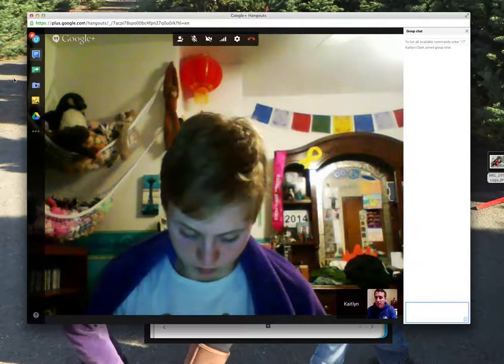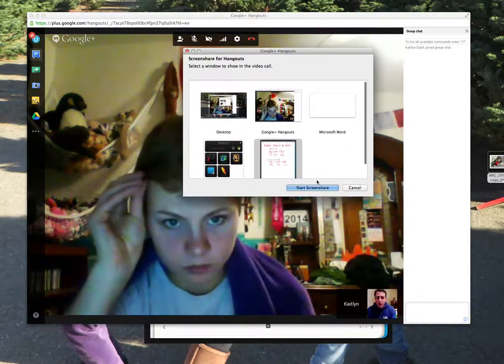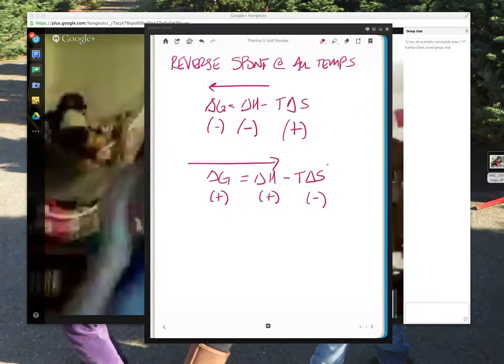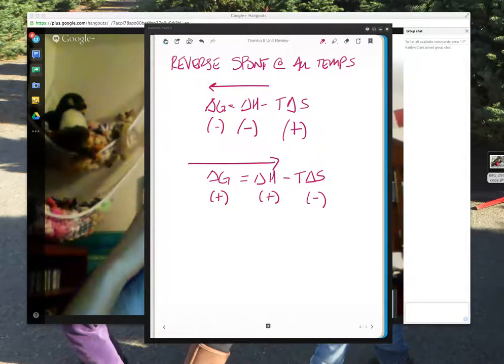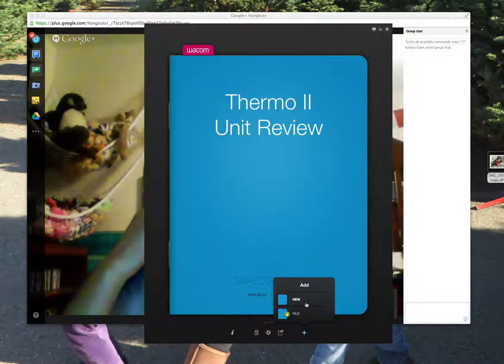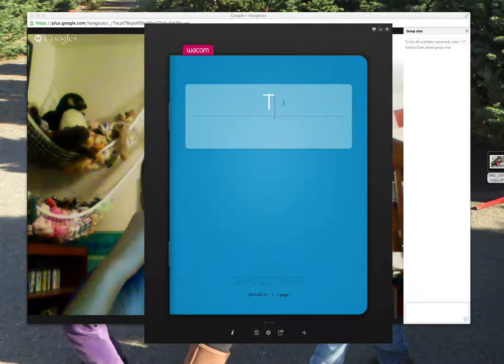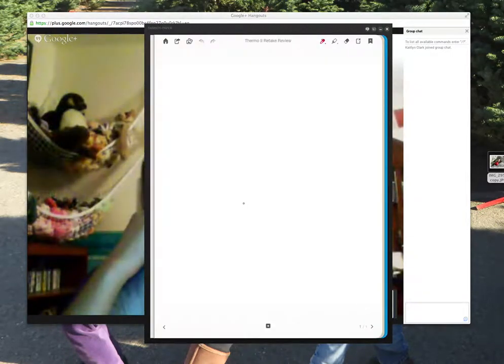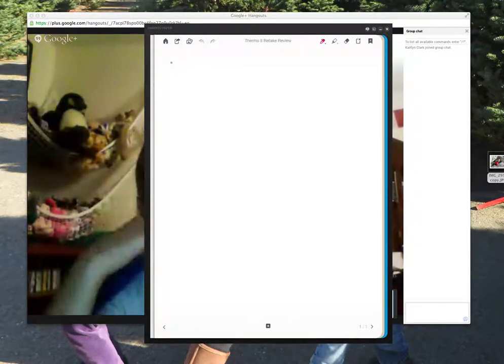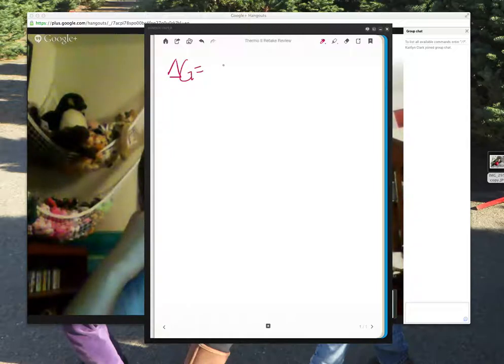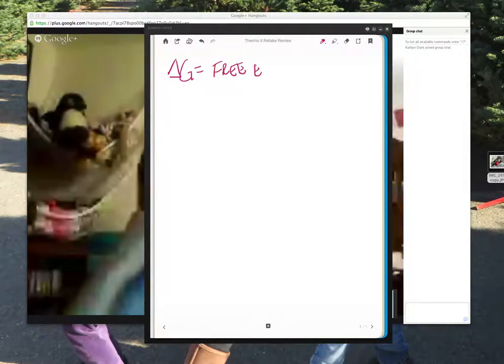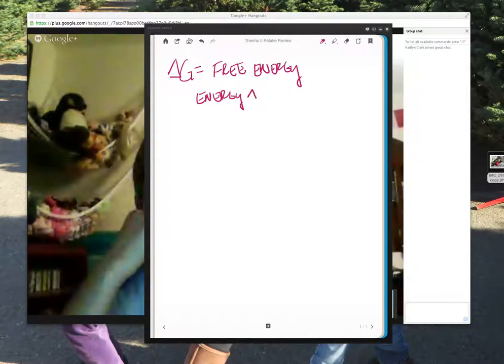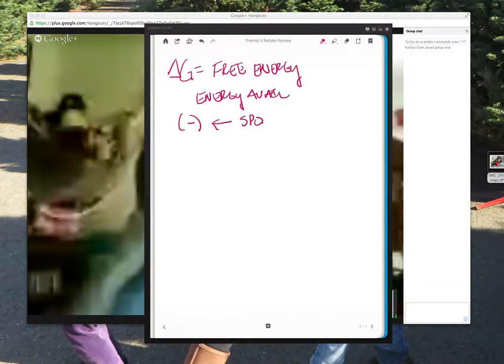So thermo and equilibrium. I'm going to do a screen share with my bamboo tablet. When we're talking about delta G, that is the free energy and that's the energy available for a reaction. And the more negative it is, the more spontaneous it is, the more likely it's just going to occur on its own.